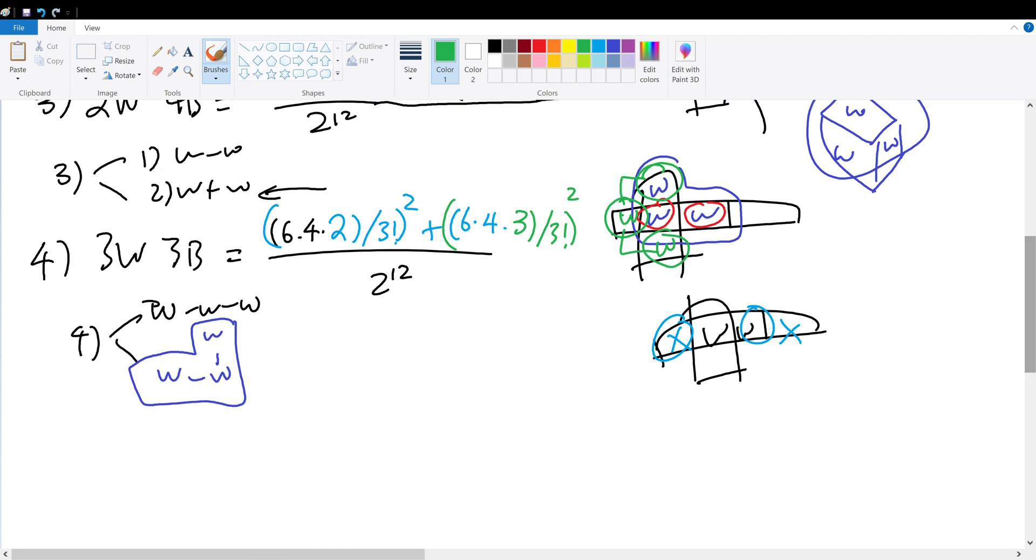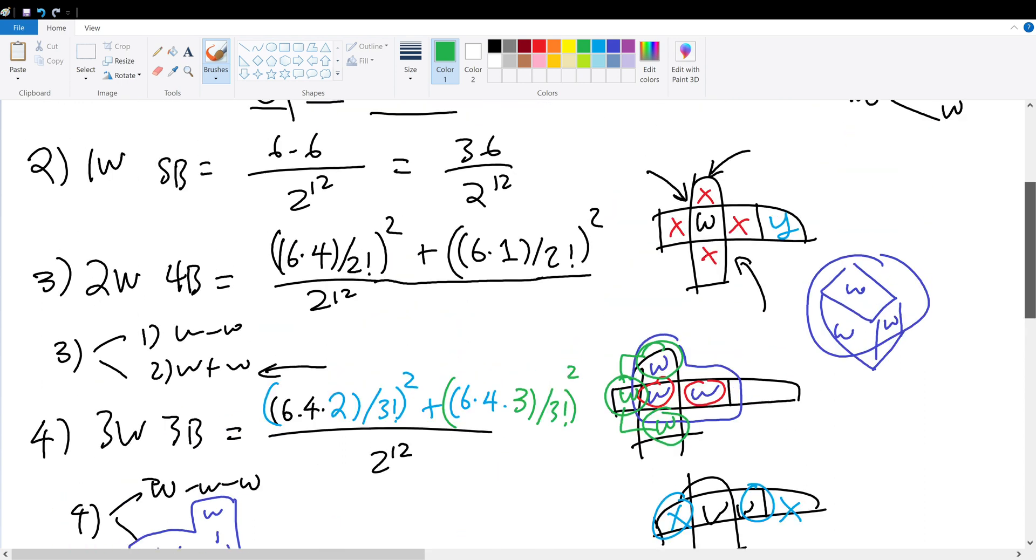Let's consider case five. Case five, we have four white and two black. But wait, that's the same as four black and two white, which is the same as case two. So that means all we have to do is multiply case two by two, case one by two, and case three by two, and we're done. Sum them up, and we get the answer.